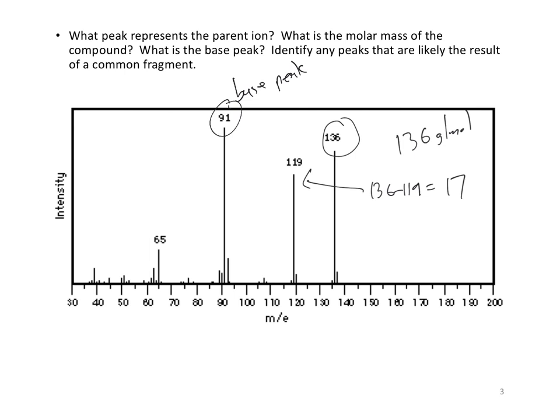And same thing, when I do, for this peak, 136 minus 91, I get 45, right? I'm not sure that's really telling me anything either. It's something roughly the size of a propyl, but it's not the same size as a propyl, and so I don't know if I'd go out on that limb.